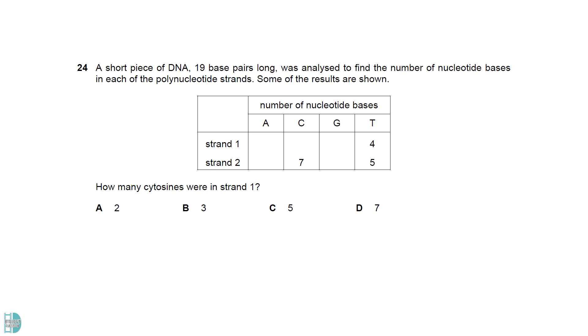The nucleotides of the two strands form complementary base pairs. There are 7C on strand 2. There will be 7G on strand 1. There are 4 and 5Ts on the strands. This gives us the number of As. The DNA is 19 base pairs long. So, there are 38 nucleotides in total. Minus out the ones that we have worked out, there are 6 bases left. So, there should be 3Cs on strand 1 and 3Gs on strand 2.